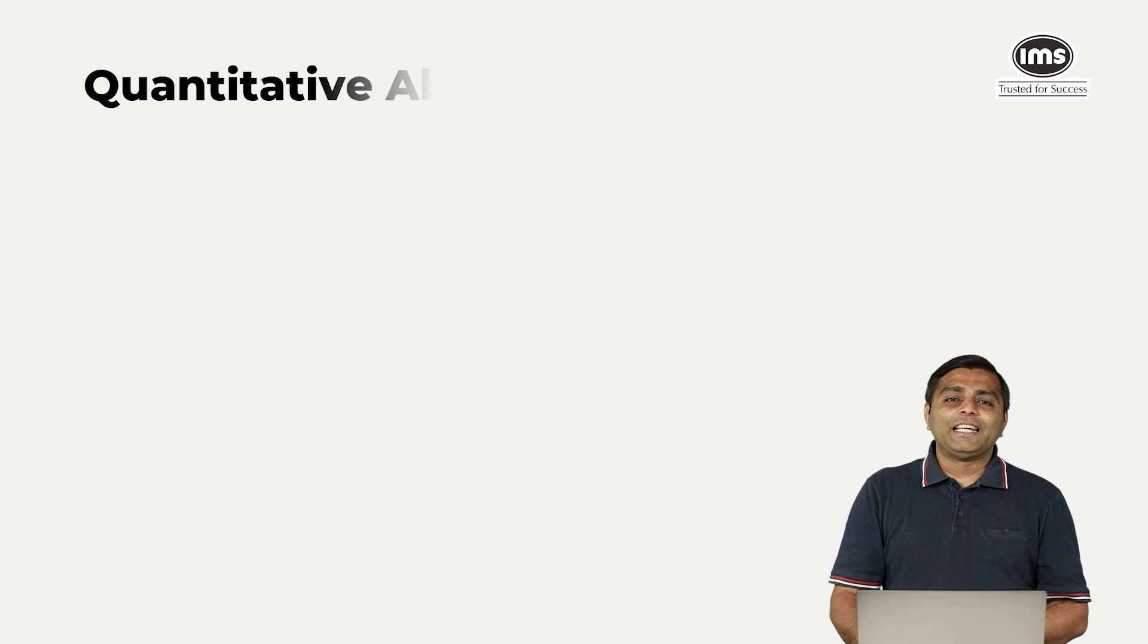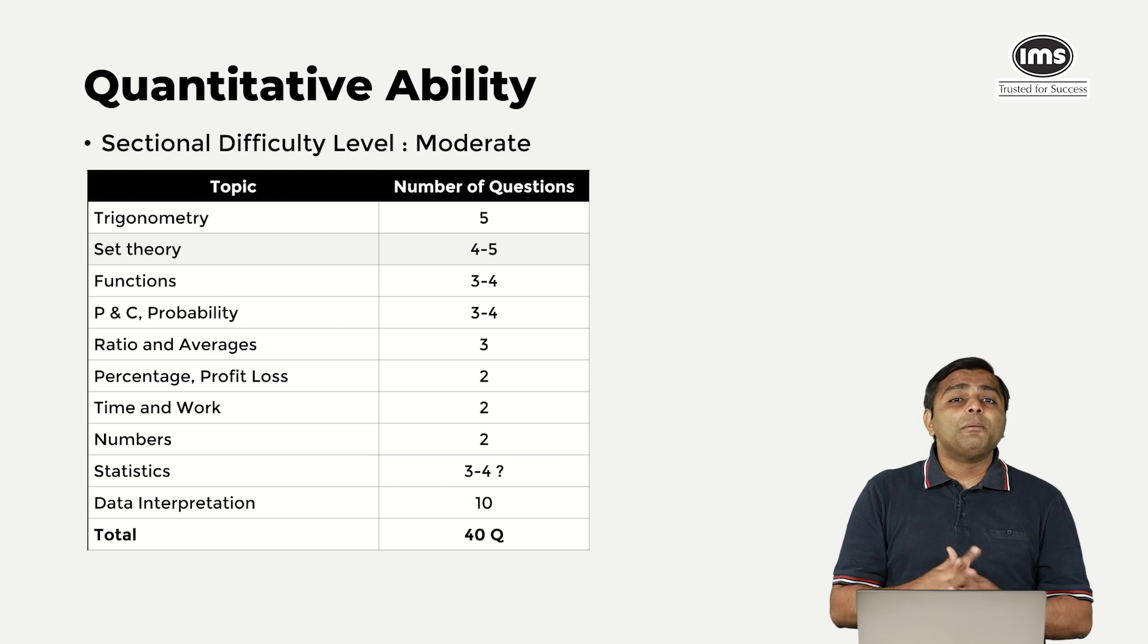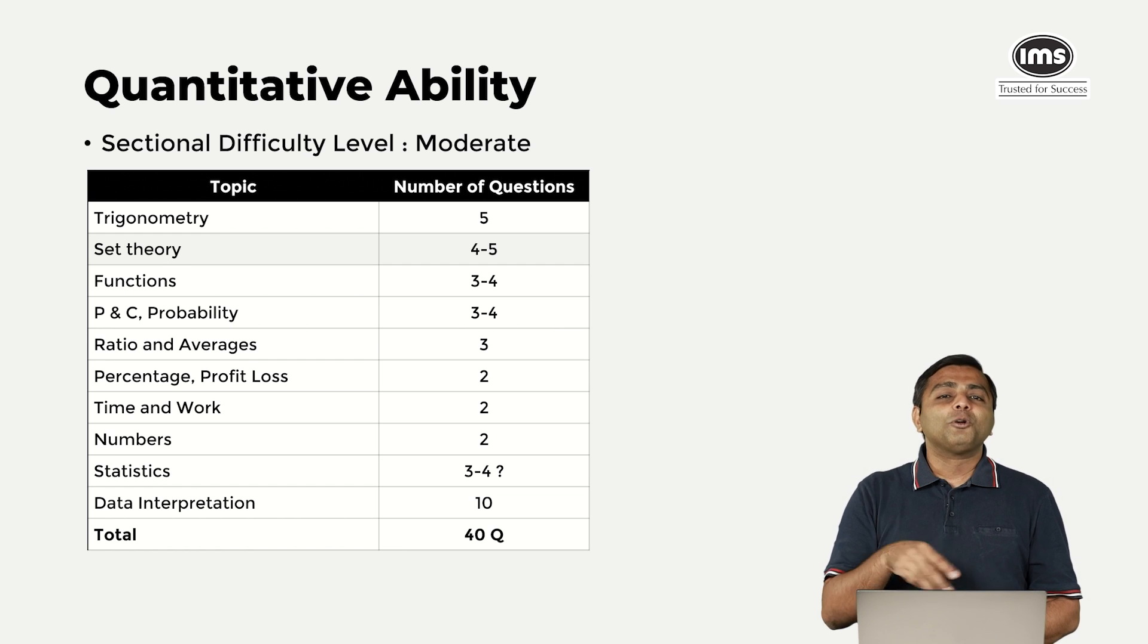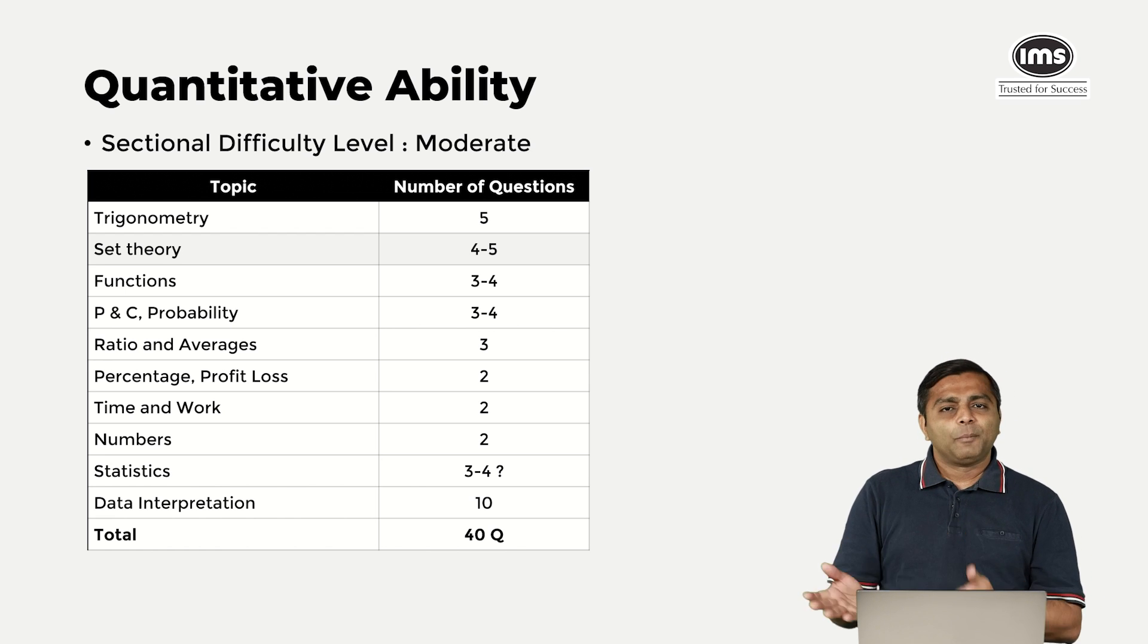Now moving on to each section in detail, we start with quantitative ability. We thought the overall section was moderate for this year. This is the table which we have gathered from whatever our students have given us the data. As always, trigonometry, set theory, functions are dominating the questions. Almost around 13 to 14 questions have come only from these three topics. But yes, arithmetic has never disappointed. So if you are good at arithmetic, you should be able to do a good 10 to 15 questions from arithmetic also. DI mostly is connected to arithmetic, so another 10 questions of DI should also help your cause.